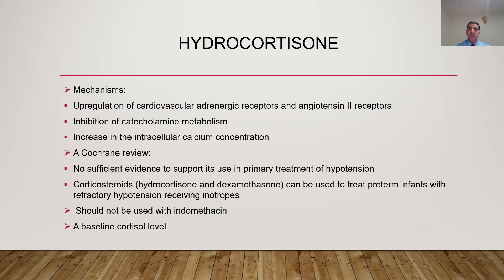Hydrocortisone can be helpful in hypotension through different mechanisms: upregulation of cardiovascular adrenergic receptors and angiotensin-2 receptors, inhibition of catecholamine metabolism prolonging catecholamine availability, and increasing intracellular calcium concentration. A Cochrane review found insufficient evidence to support its use as primary treatment for hypotension. However, corticosteroids — either hydrocortisone or dexamethasone — can be used to treat preterm infants with refractory hypotension who are already receiving inotropes. It should not be used with indomethacin, and a baseline cortisol level should be taken before use.